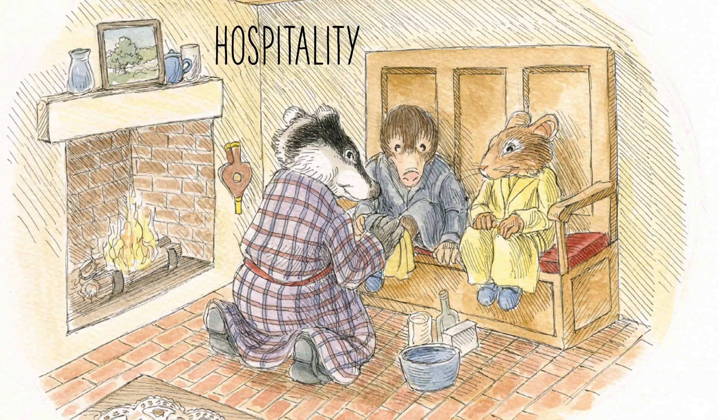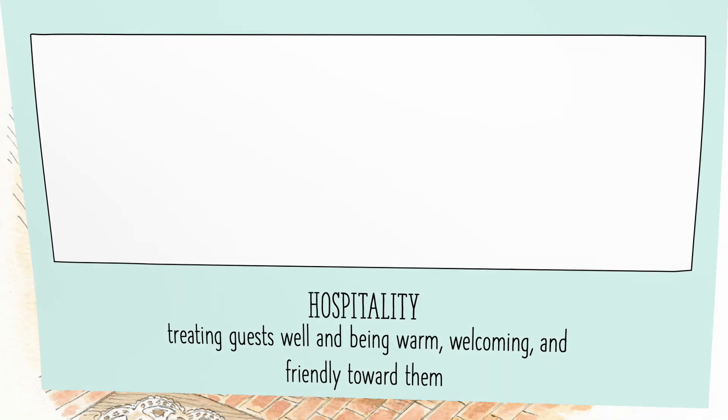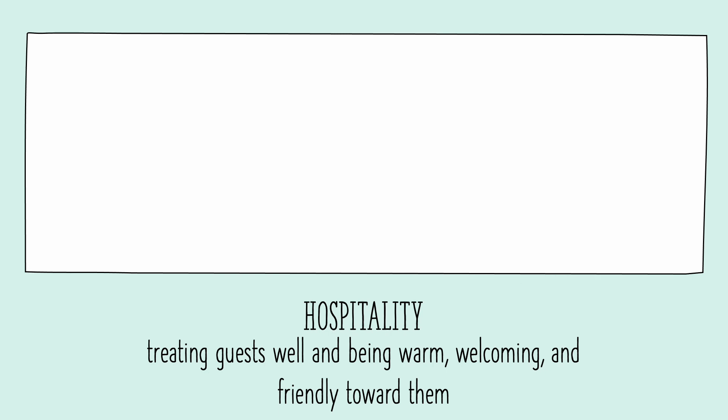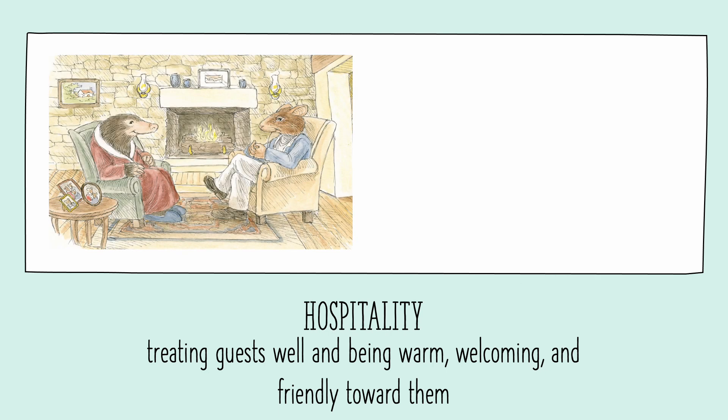One final theme that we see in this story is that of hospitality. Hospitality is treating guests well and being warm, welcoming, and friendly toward them. A hospitable person is someone who is very attentive to guests or friends' needs. This trait is shown by various characters throughout the story. For example, Water Rat showed hospitality to Mole at the beginning of the story, when they got wet in the water and Water Rat took Mole to his home. There, he made sure Mole was warm, comfortable, and fed.